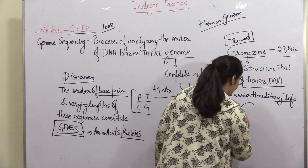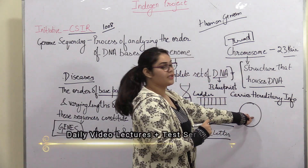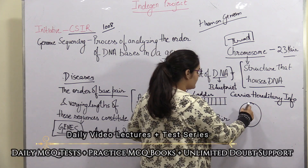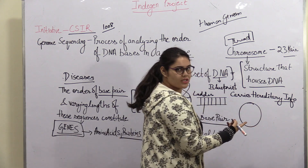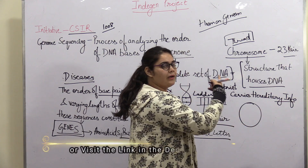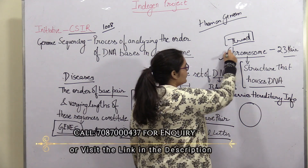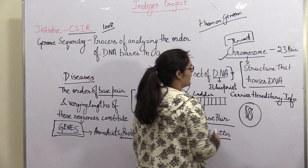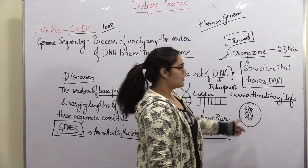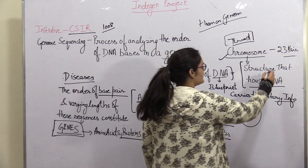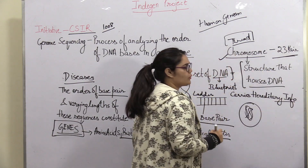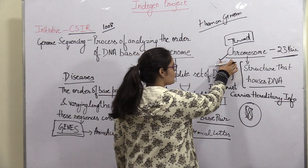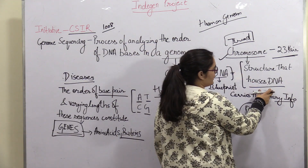So, the cell is the basic functional unit of a human being. The cell has multiple things, but for this topic, what is important is chromosomes. A chromosome is a thread-like structure present in your cell. In each cell, there are 23 pairs of chromosomes, meaning 46 total. And inside chromosomes, you have DNA.